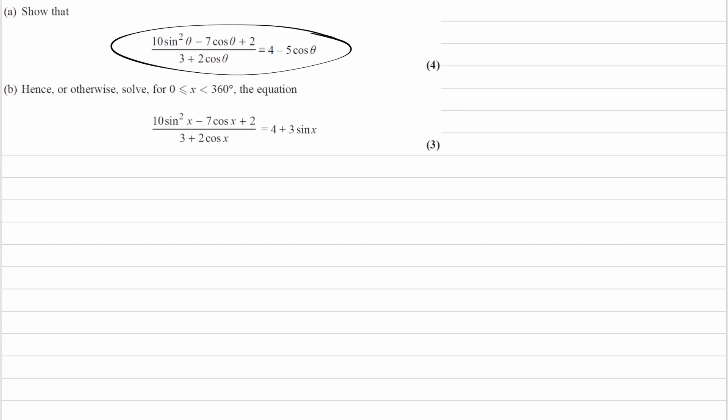For part A, we're trying to show that this identity is true. So when you're trying to prove identities, you want to usually start with one side, manipulate it, and then try and get it to look like the other side.